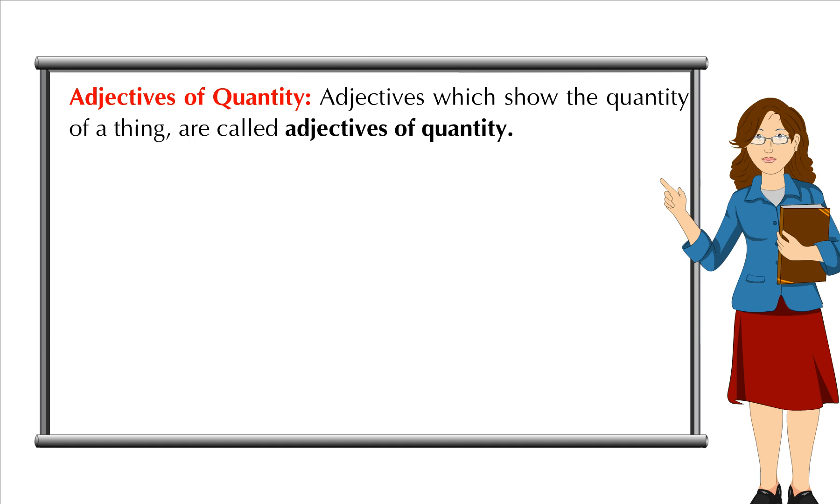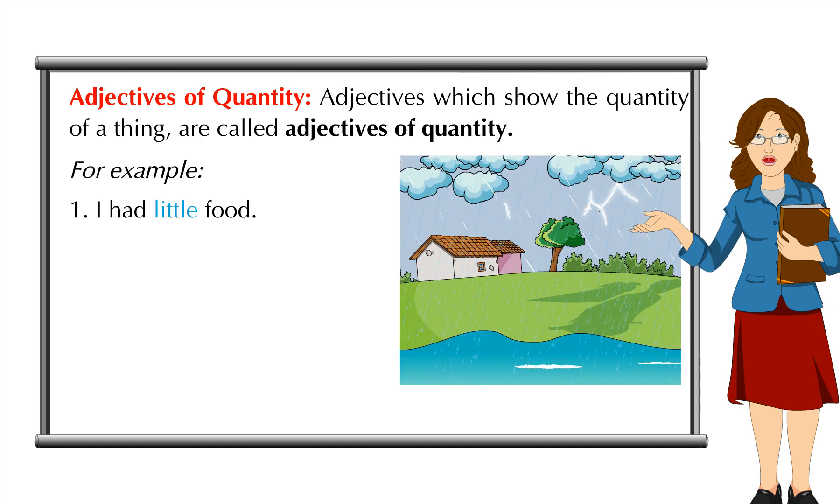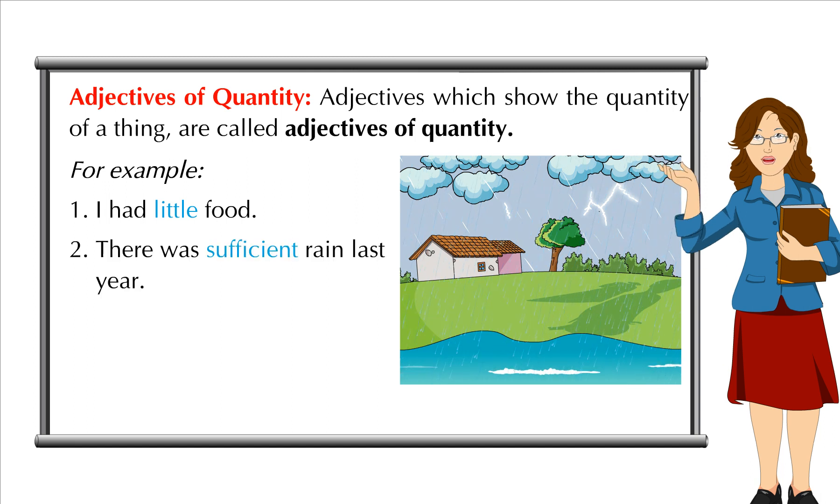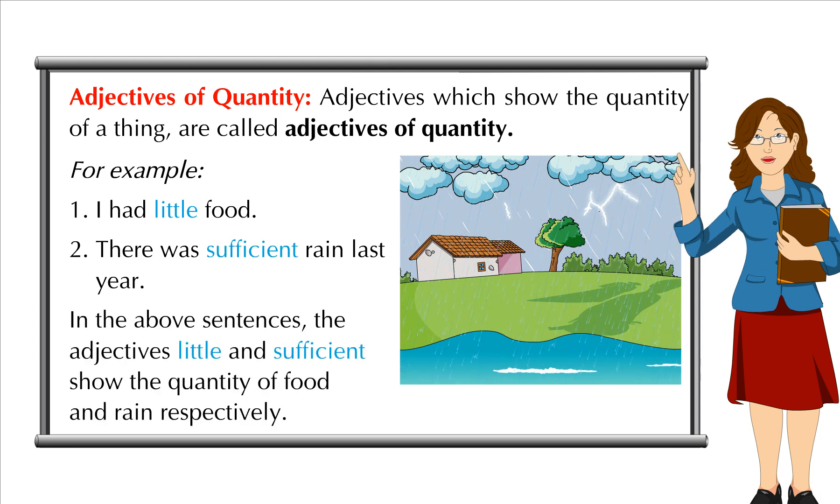Adjectives of Quantity: Adjectives which show the quantity of a thing are called Adjectives of Quantity. For example, I had little food. There was sufficient rain last year. In the above sentences, the adjectives little and sufficient show the quantity of food and rain respectively.